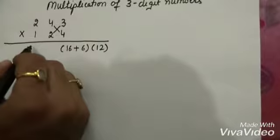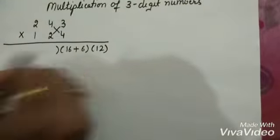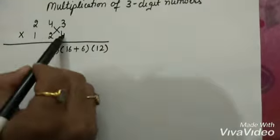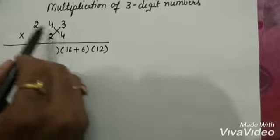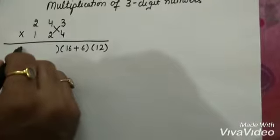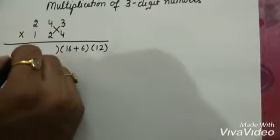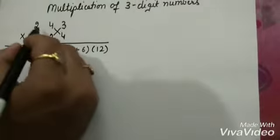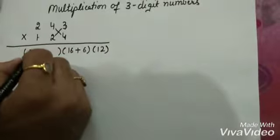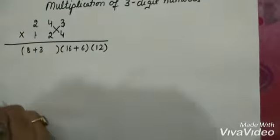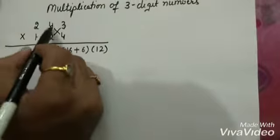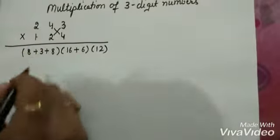4 times 4 is 16 plus 3 times 2 is 6. Next step, look very carefully. This 2 and 4 is to be multiplied together. 2 times 4 is 8. Then this 1 multiplied with 3 gives us 3. 4 multiplied with 2 gives us 8.